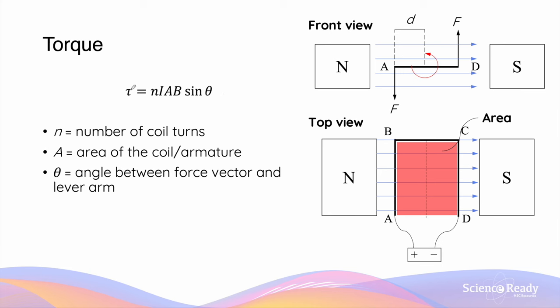Remember that the number of turns of coil is important, as it affects the magnitude of the total force acting on the coil to produce the torque. This is why we include the variable N in the calculation of torque acting on the armature.